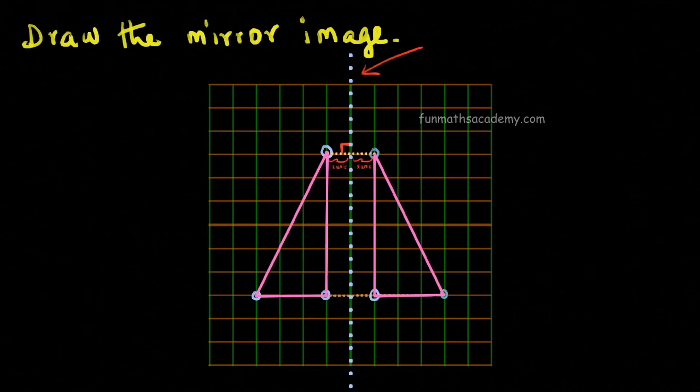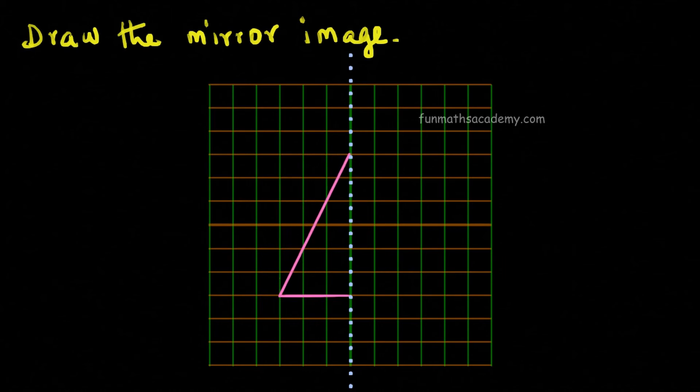What will you do if the original shape is on the mirror line? We use the same method here. We need to make sure that the corners are at the same distance from the mirror line as they are from the other side.